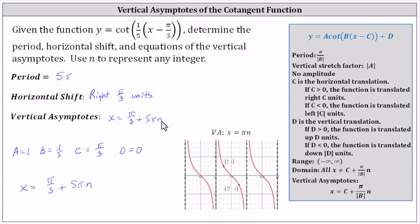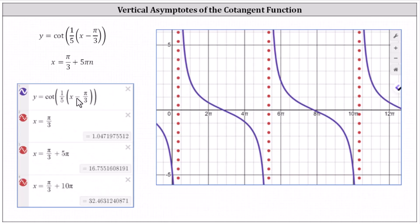Let's verify this graphically. In purple, we have the graph of the given cotangent function. Notice for the equations of the vertical asymptotes, when n is zero, we have x equals pi divided by three.